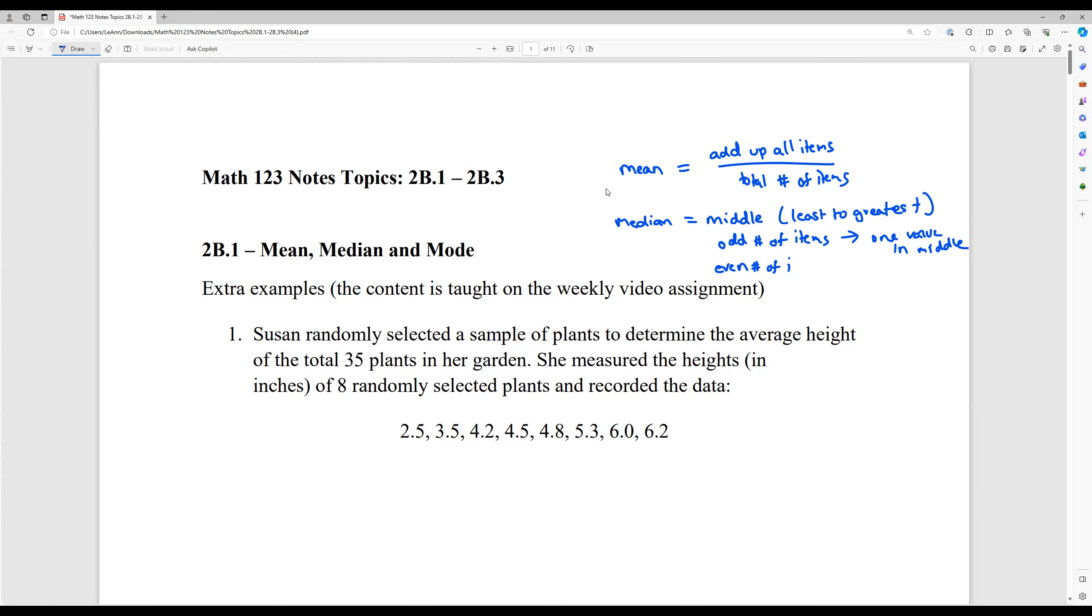If you have an even number of items, you're going to have two values in the middle and we average them. So the median equals the average of those. So we've got two values in the middle because you have an even set of data. You have to add them together and cut it in half to get the median.